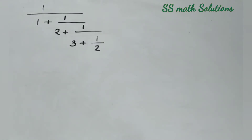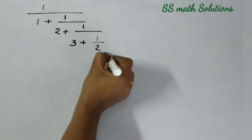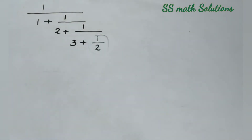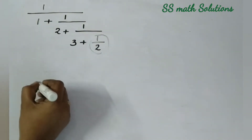Let's go directly to our simplification. Here is our first question: 1 divided by 1 plus 1 divided by 2 plus 1 divided by 3 plus 1 by 2. Everybody knows the actual way of simplification is a little bit difficult. We are considering the shortcut method only. For solving this type of question, we need to consider this last fraction — this 1 by 2.